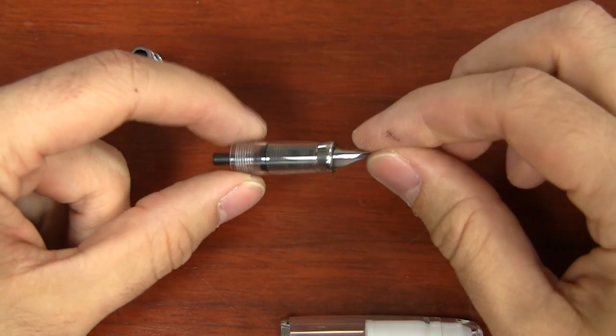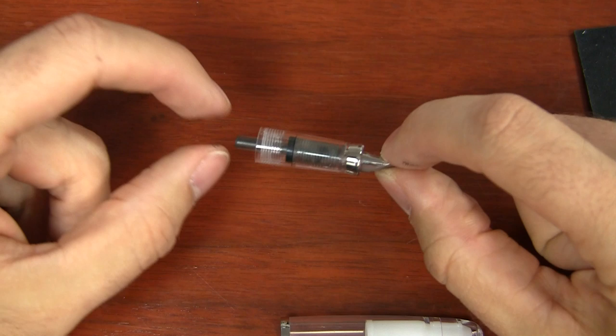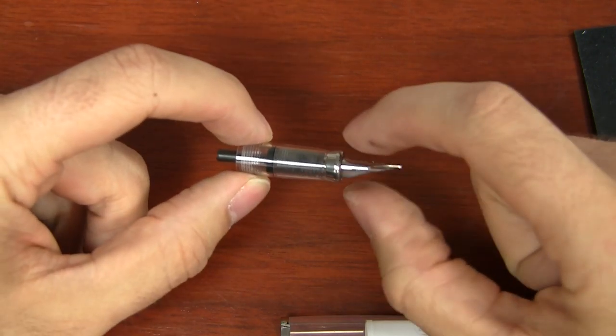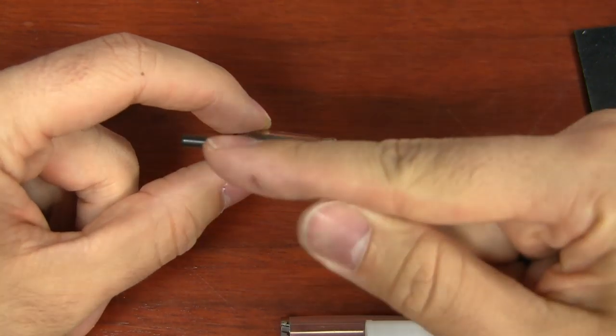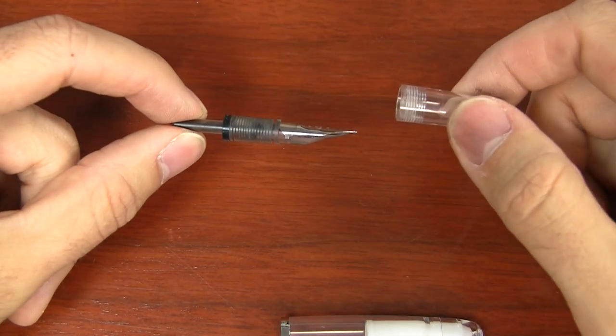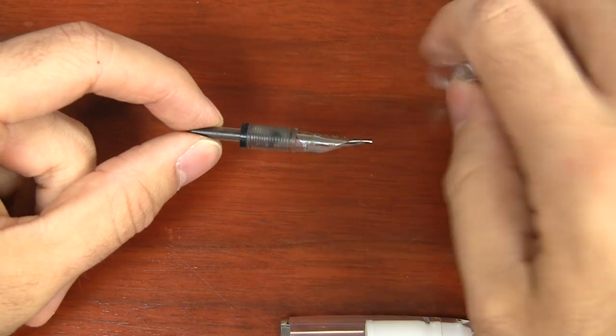Once you have this piece here, you've got to either grab the post right here of the feed or you can just grab the nib and the feed together and just push it out the back way. It just slides right out of there, way easier than trying to pull it out the other way.